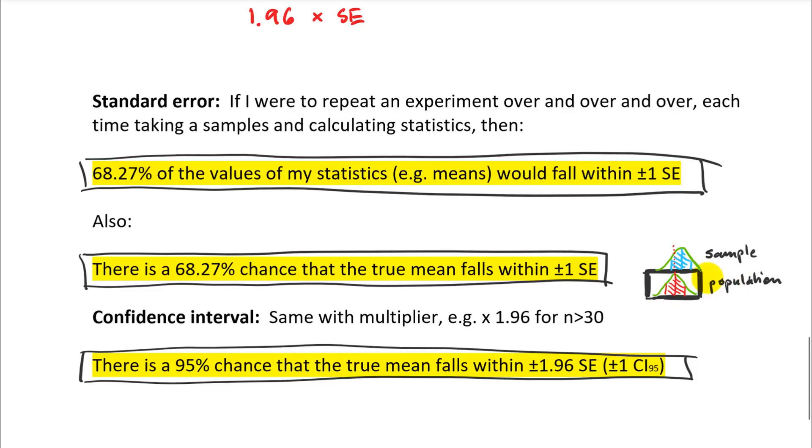So there's a 68% chance that the true mean falls within one standard error. So the true population mean is in a black box, right? So we don't know that. But we know that the distribution of the sample means will center around this mean here, right? And we also estimated the width of that distribution. That's our standard error.